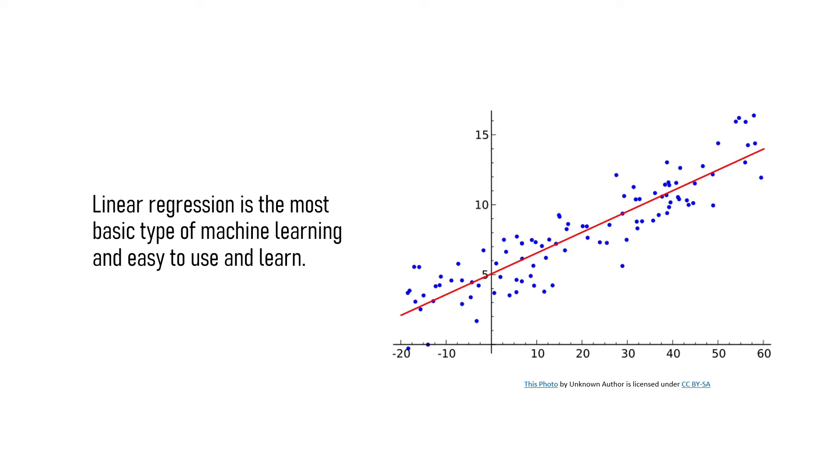Linear regression is the most basic type of machine learning and it is as simple as feeding a line to the dots.